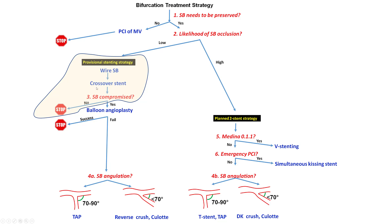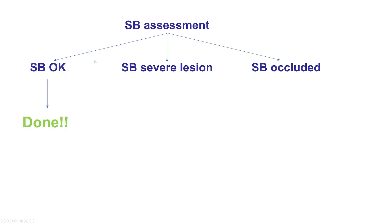The next step is to examine the side branch and determine if the side branch is compromised. If the side branch is good, then the procedure is done. There is no need to do balloon angioplasty either before or after.